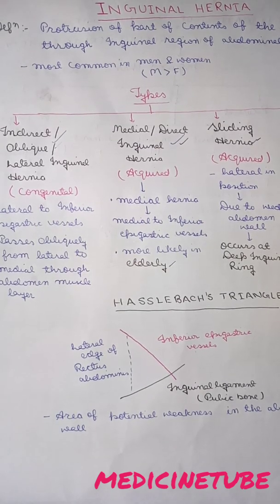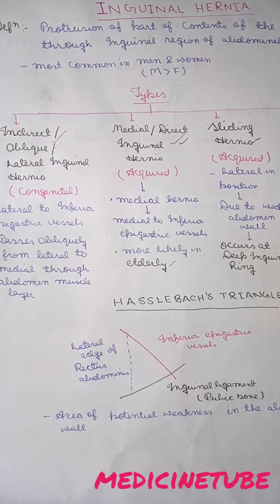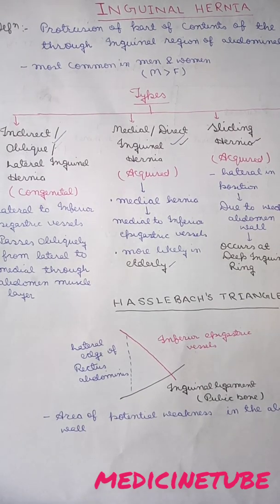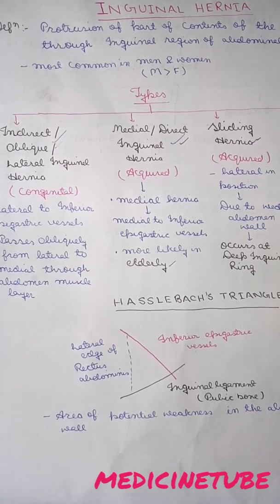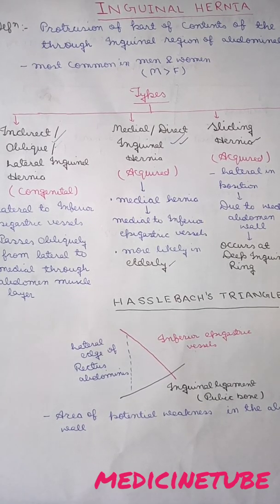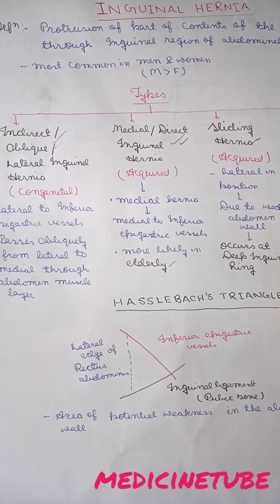If any of the content of the inguinal region of the abdominal wall comes out of the inguinal region of the abdominal wall, that is called inguinal hernia. This is the most common hernia. Today we will learn inguinal hernia's types and classification. Types are mainly two: indirect inguinal hernia and direct inguinal hernia.